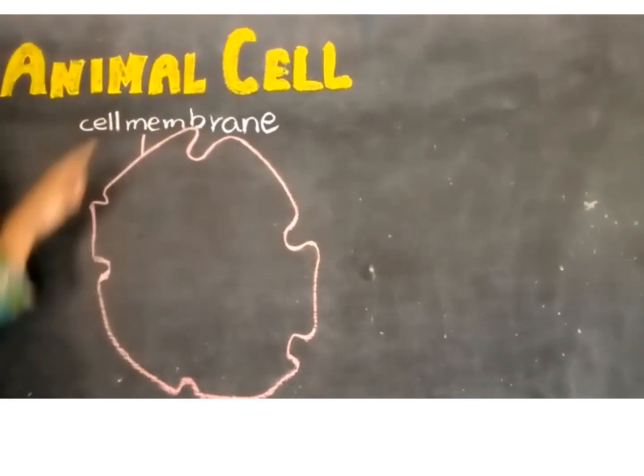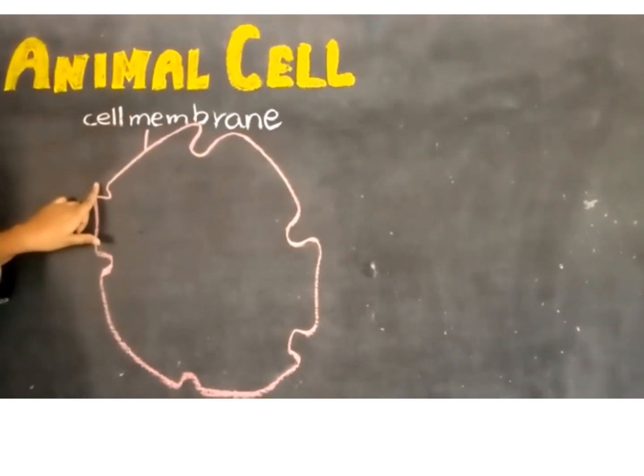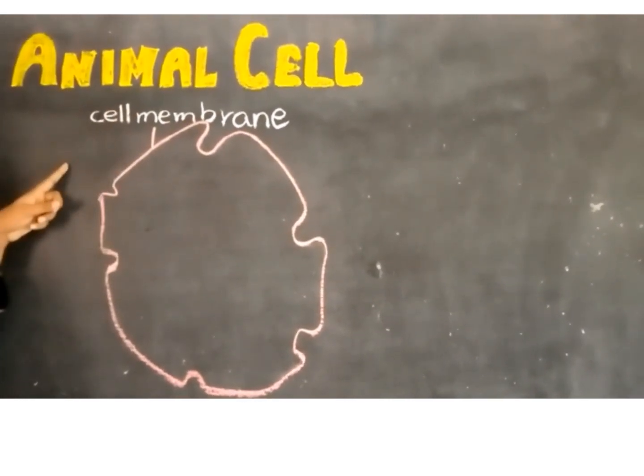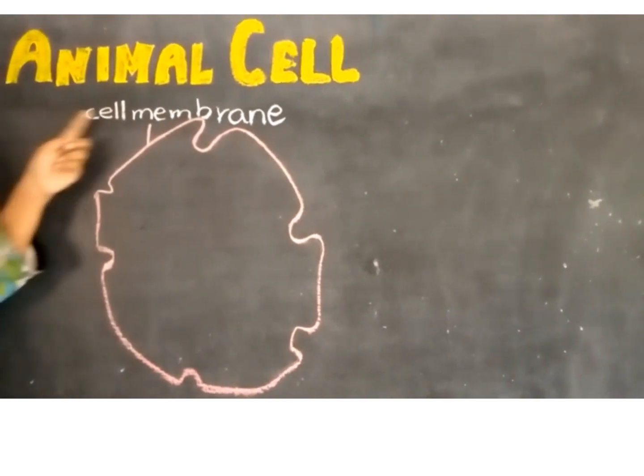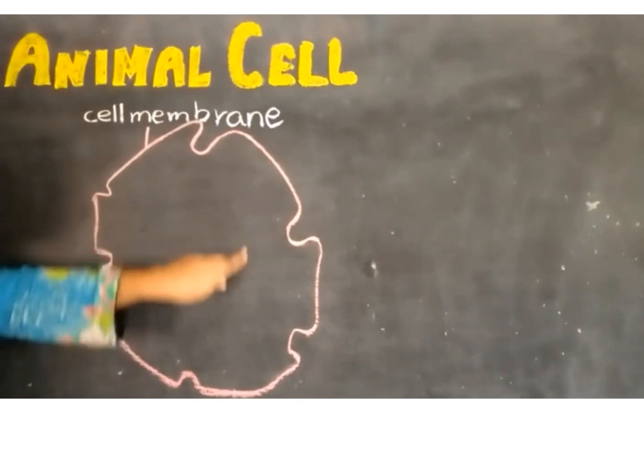The function of the cell membrane is to allow certain substances to move in and out of the cell. The cell membrane also protects the internal structure of the cell.